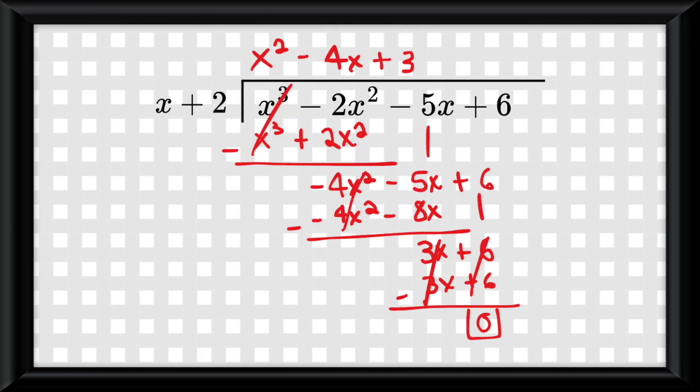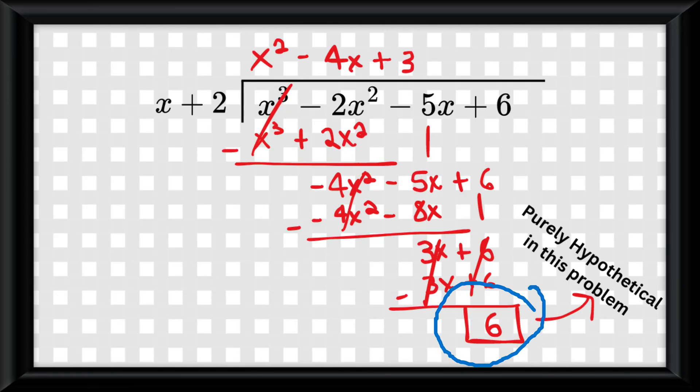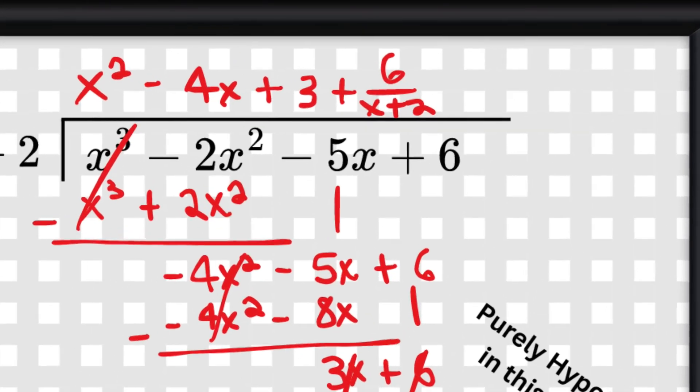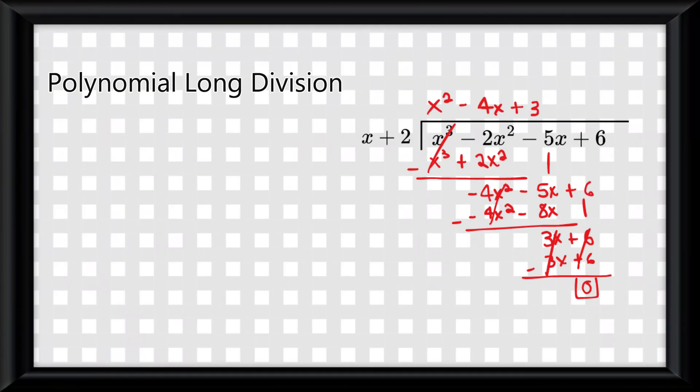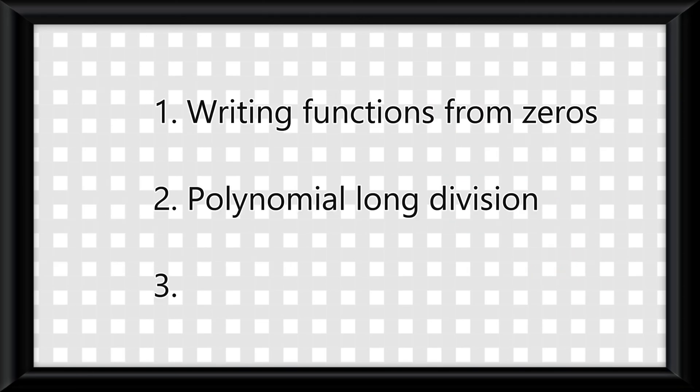and you rinse and repeat this until you're left with either 0 or a remainder which you would add onto the end of the quotient over the divisor. So your rule with polynomial long division is to multiply, then subtract, and rinse and repeat till you are done. Okay, that is part two.